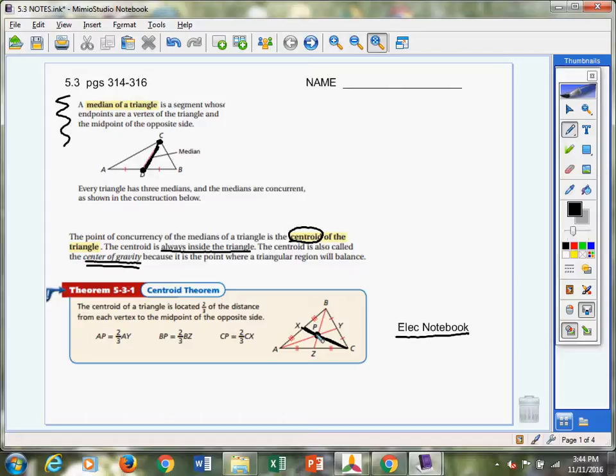The larger piece, PC or CP, is two-thirds the length of the whole thing, CX. That's what I'm pointing out to right here. CP is the larger of the two segments subdivided by that centroid. CP is two-thirds of the whole thing, C to X. CP is two-thirds of the whole thing, AY. And then BP is two-thirds of BZ. That's what I was trying to point out here, here, and of course here.